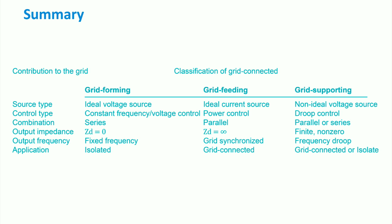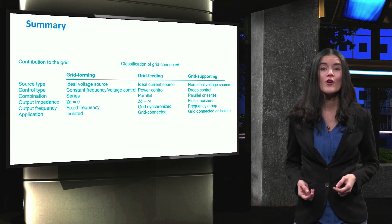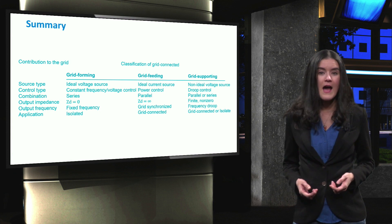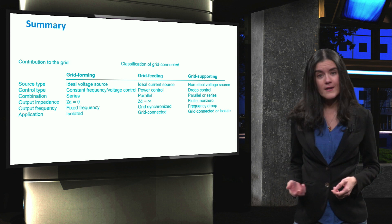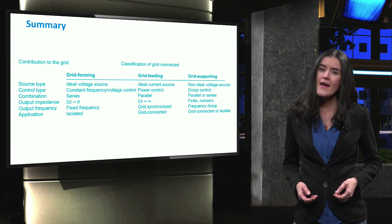the grid-supporting converters can be divided into current source-based and voltage source-based. They contribute to the regulation of the grid and can be used for both grid-connected and islanded modes of operation. In the next videos, we will see how droop control is implemented in microgrids through these converters.